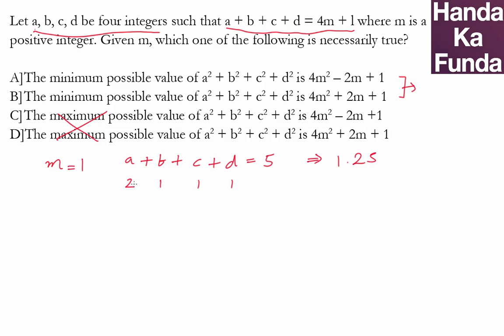Now, what is the value of a square plus b square plus c square plus d square? That is 4 plus 1 plus 1 plus 1, which is 7, 4 plus 3 times 1, which is 7.